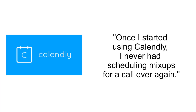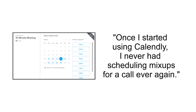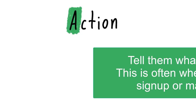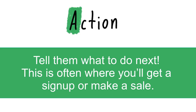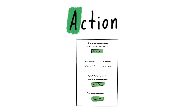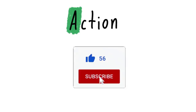Example number three: once I started using Calendly, I never had scheduling mixups for a call ever again. If you're looking for a calendar program, you've probably had a bunch of scheduling mixups, and this testimonial says you'd never have to reschedule a call again — you can see yourself with the product and why it's so valuable. The last thing to do is make people take action — tell them what to do next. This is often where you get a signup or make a sale, and so many people forget to put this part. There needs to be a call to action, a CTA, somewhere in your email or video script — something they need to do at the end.